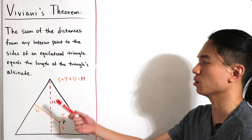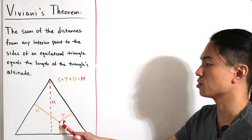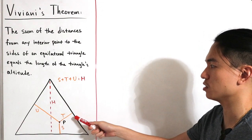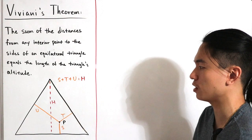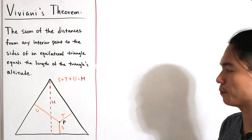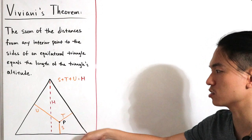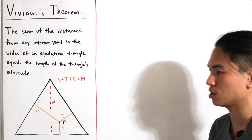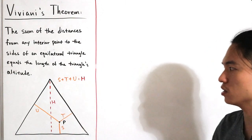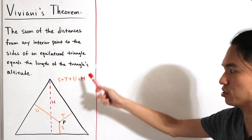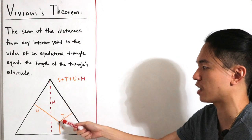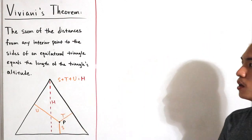Here's a diagram to illustrate: from any interior point P, we draw distances to the sides of the equilateral triangle. These distances must be orthogonal, i.e., at right angles to the sides. The sum of these distances equals the full triangle's altitude, which I denote as h, while the individual distances to each side are labeled u, t, and s.